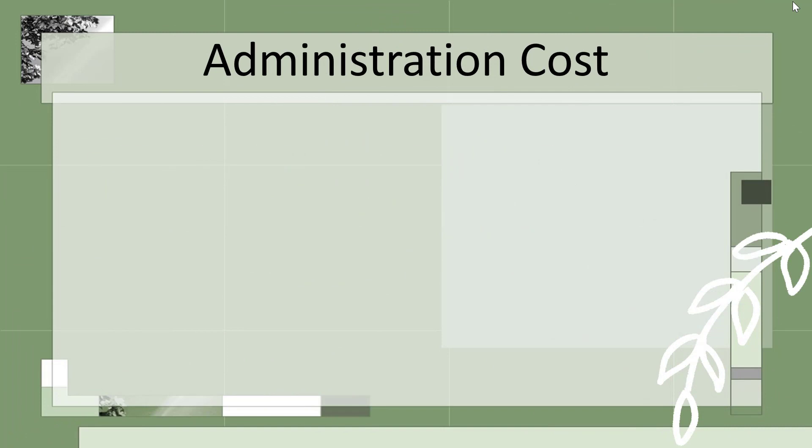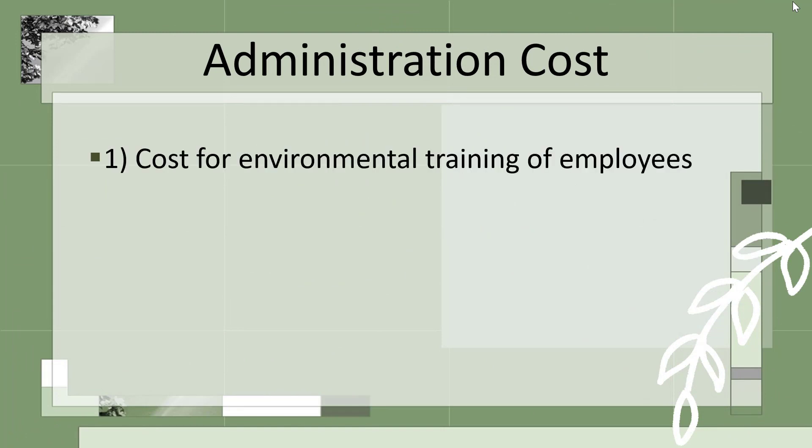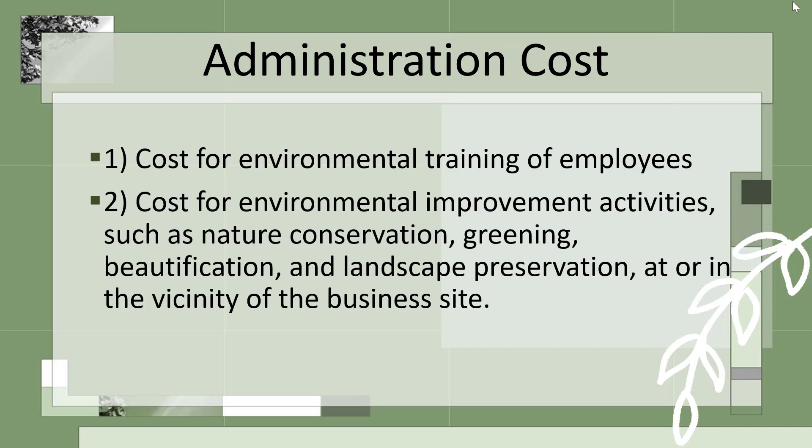Administration cost covers the cost involved in environmental training of employees of an organization, and costs for environmental improvement activities such as natural conservation, greening, beautification, and landscape preservation at or in the vicinity of business sites. All costs involved in training people, employees, or different stakeholders are included in the administration cost.